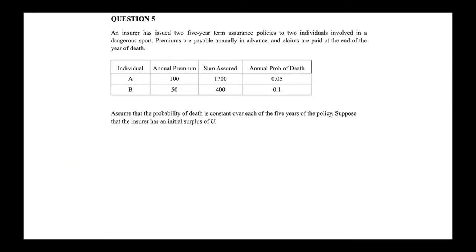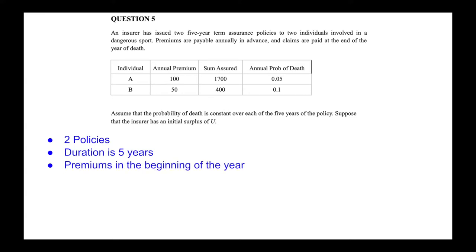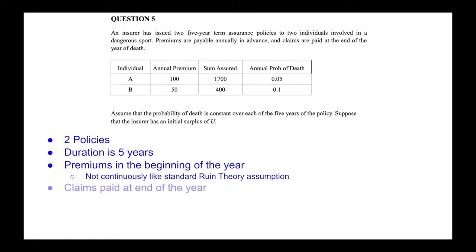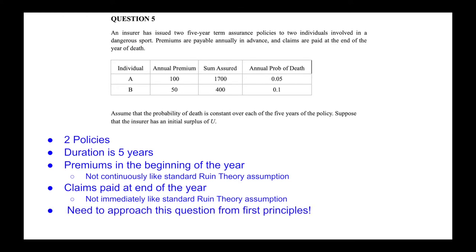Moving on to parts two, three, and four, let's revisit the preamble. We're dealing with just two policies, which is unusual — normally an insurer deals with thousands. The duration is five years and premiums are received at the beginning of the year, which is not continuous like the standard ruin theory assumption. Claims are paid at the end of the year, also unlike standard ruin theory. This means we need to approach the question from first principles rather than finding a formula and plugging in numbers.